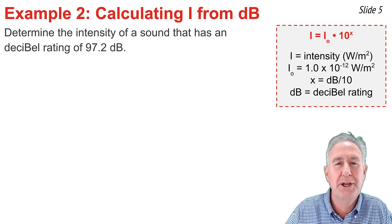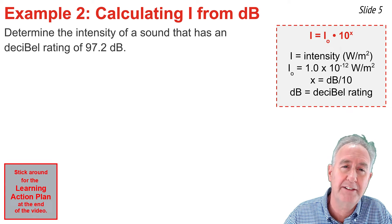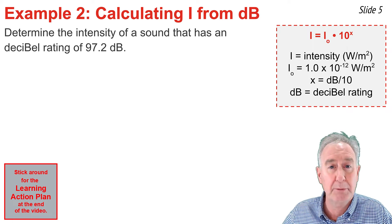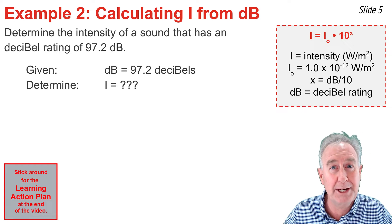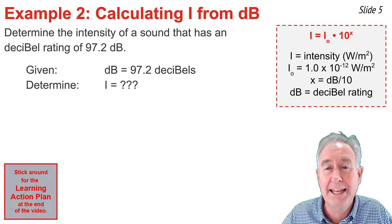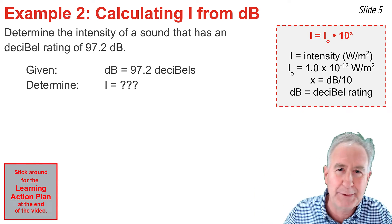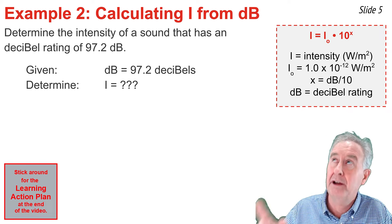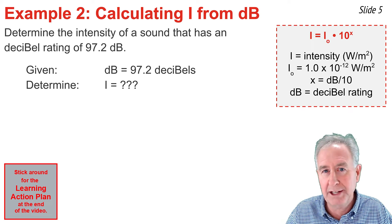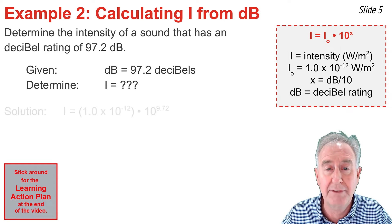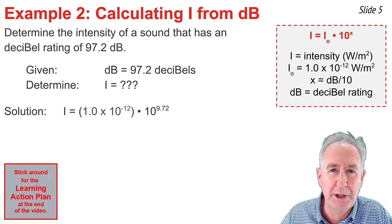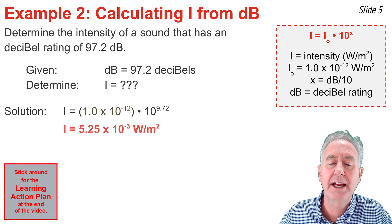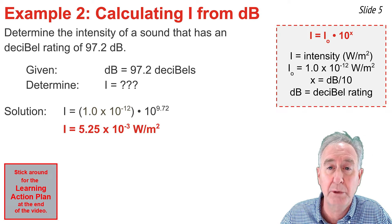In Example 2, we use this equation to calculate the intensity from a given decibel level. Determine the intensity of a sound that has a decibel rating of 97.2 decibels. I know the decibel value and I'm looking for I. I take 97.2 and divide by 10 to find x, the power on 10: 97.2 ÷ 10 = 9.72. I raise 10 to that power and multiply by 1×10⁻¹², and the result is 5.25×10⁻³ watts per meter squared.